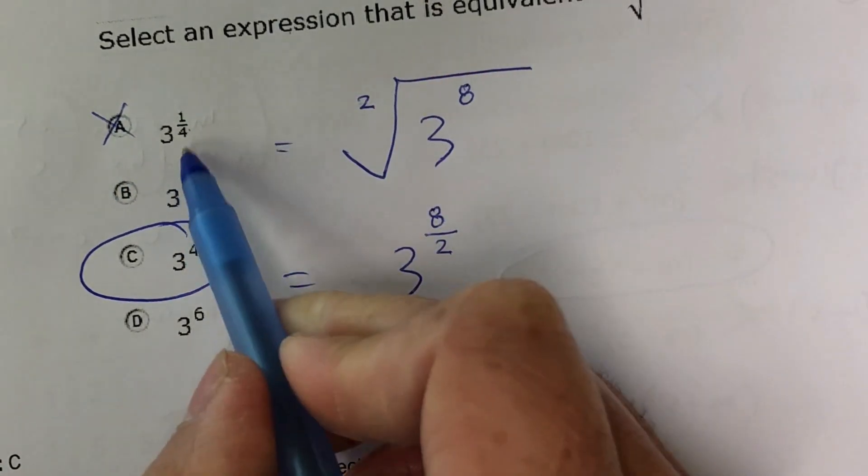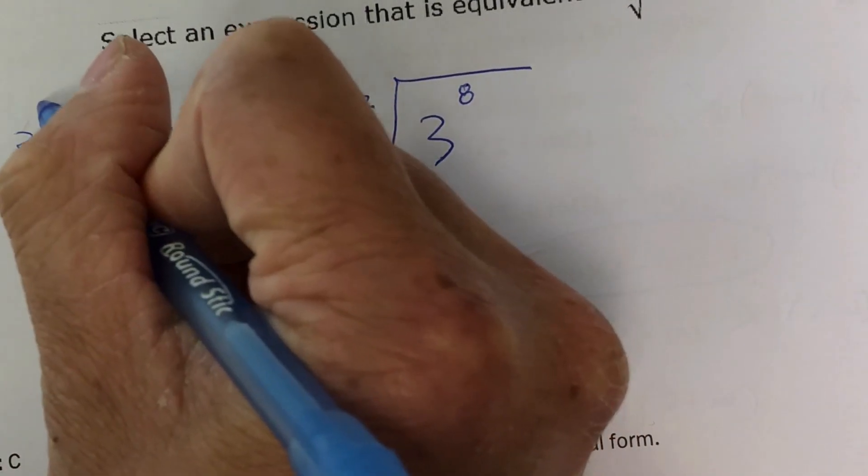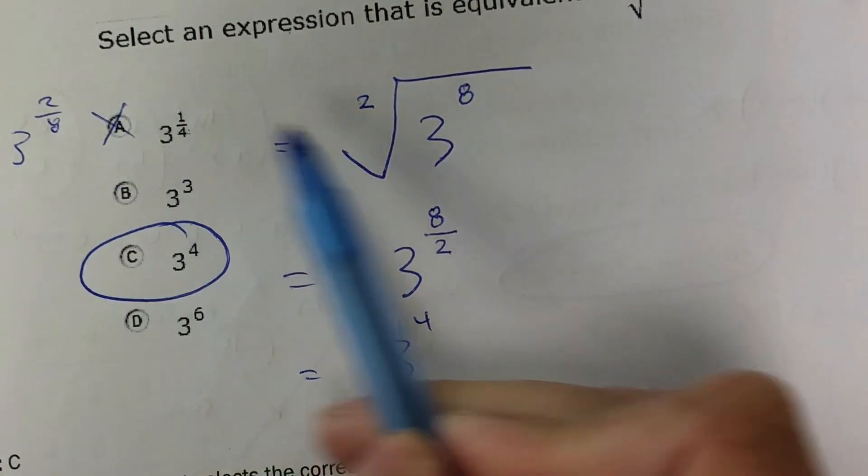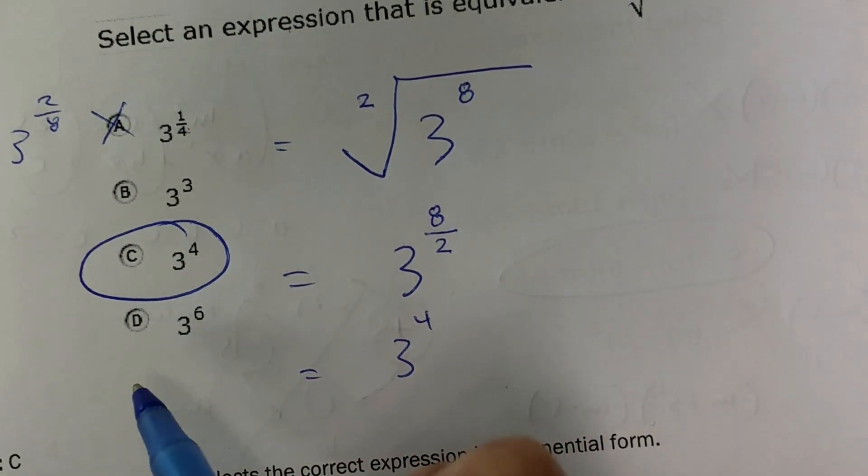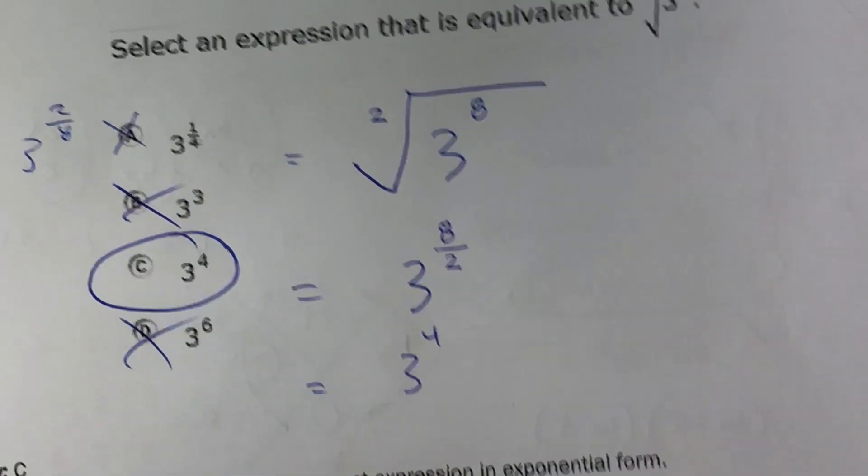A would have been wrong if you are trying to simplify these, switch those up, so it would not be this. It's not 3 to the 2nd power, and the index is 8, that would have been wrong. And I don't know how they got those, so not B or D, so the correct answer is C.